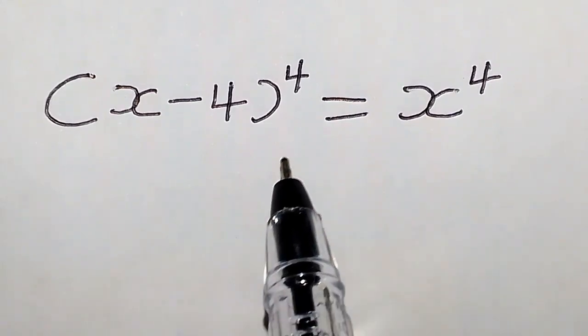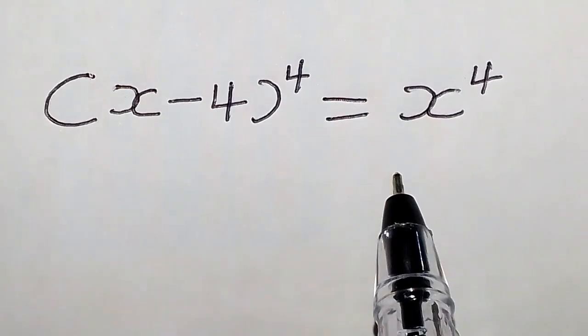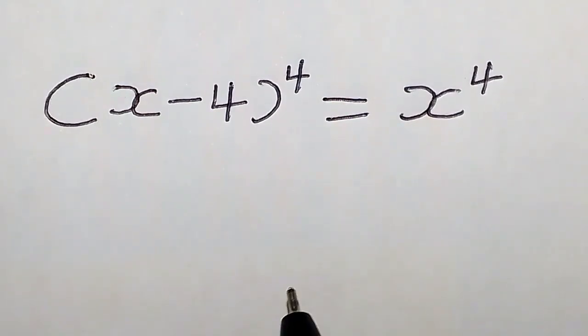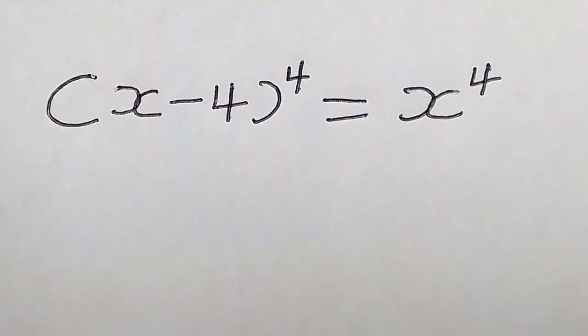The equation (x minus 4) to the power of 4 equals x to the power of 4. How do we solve this quartic equation? Without further delay, let's begin the solution.